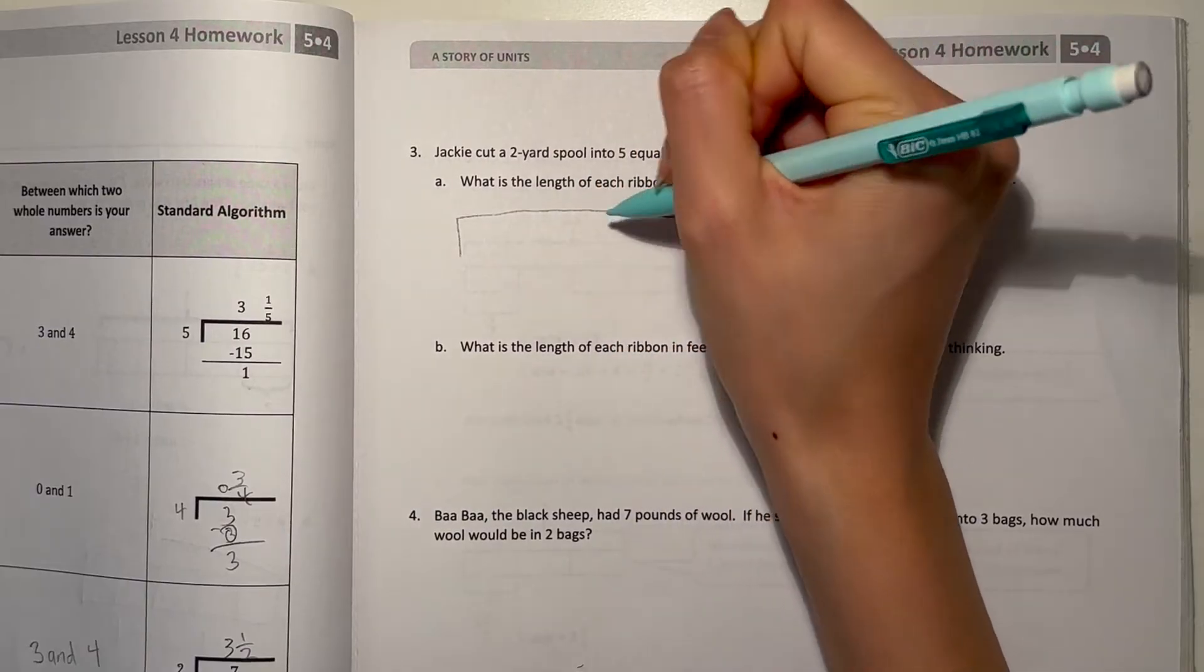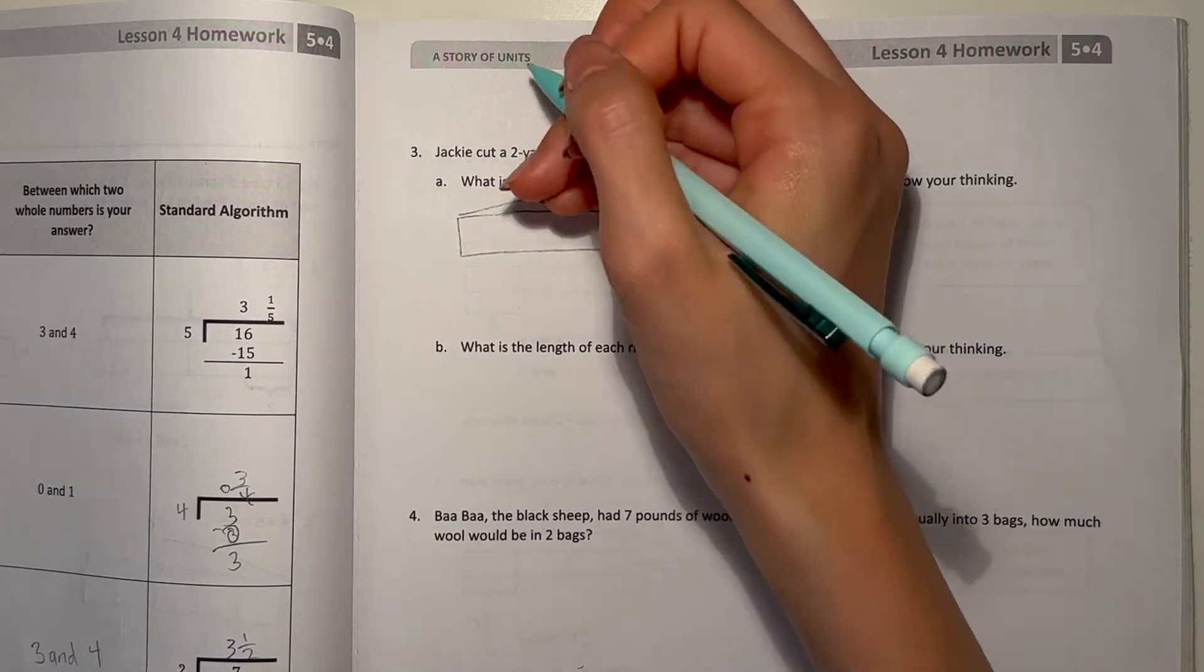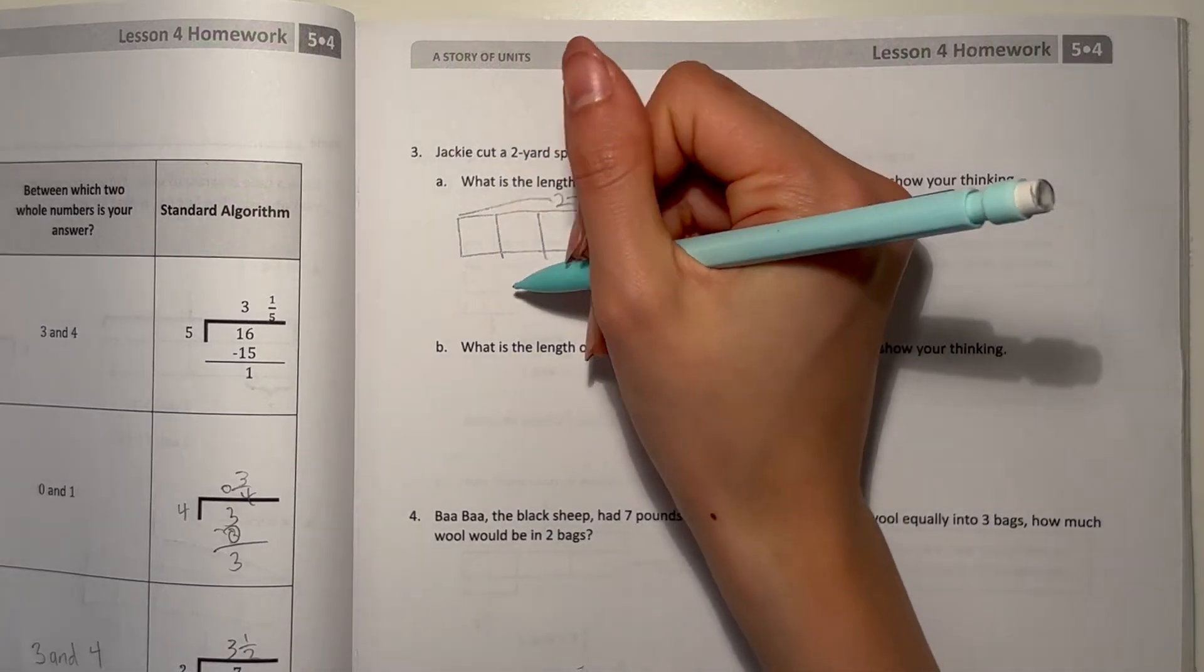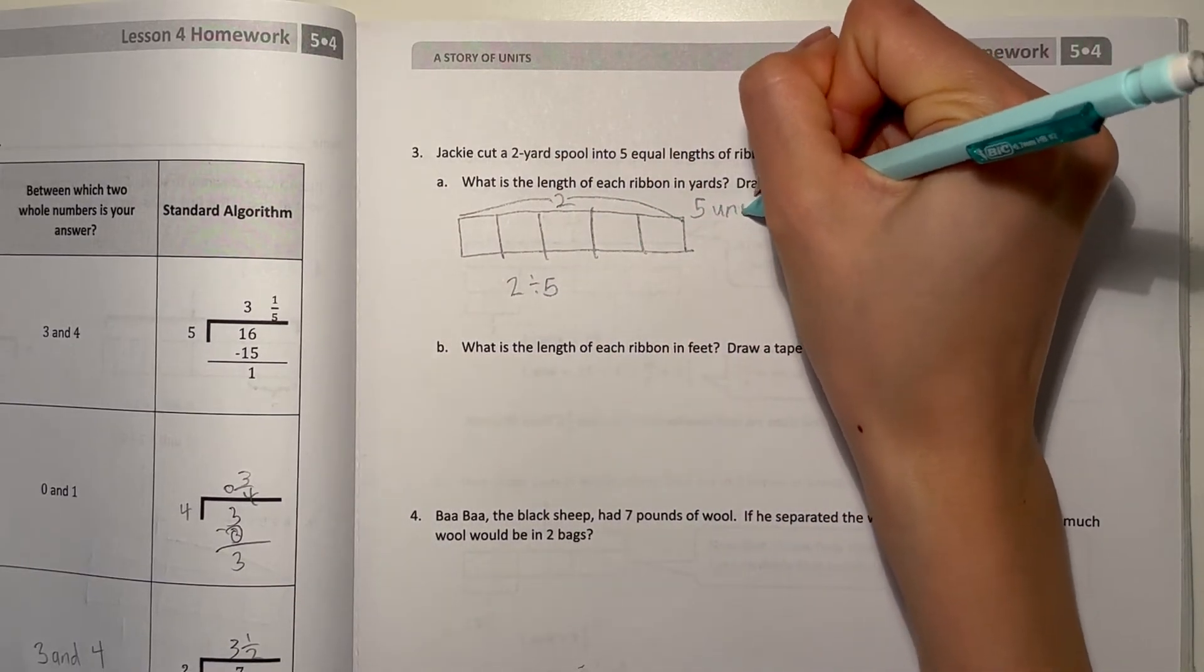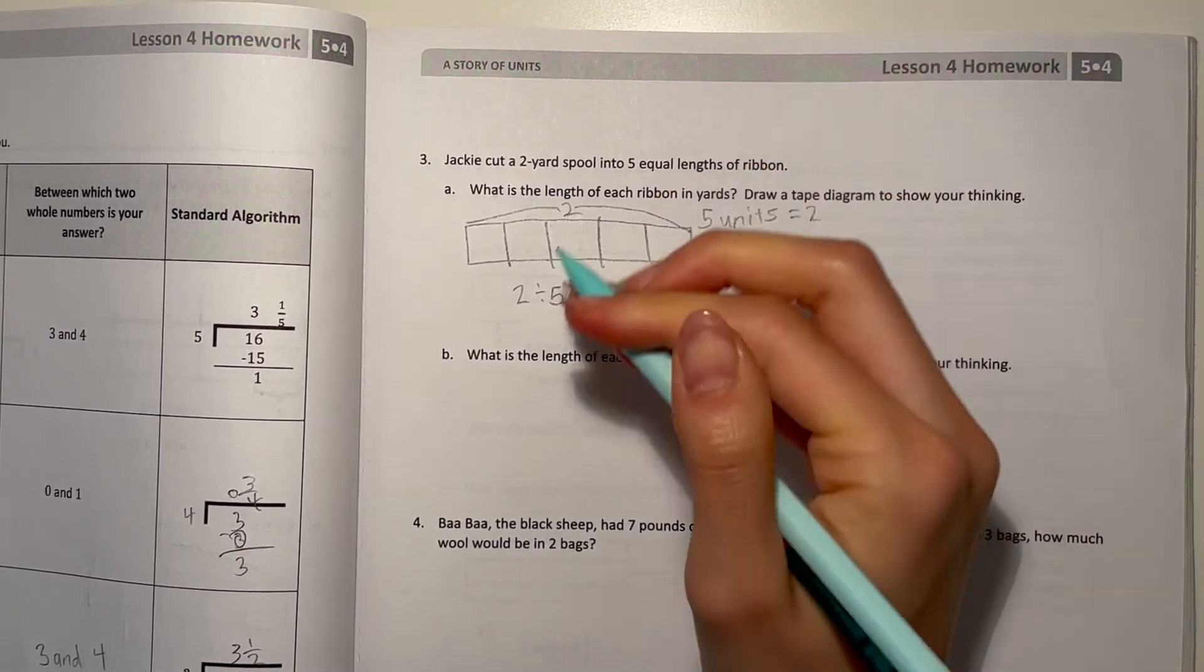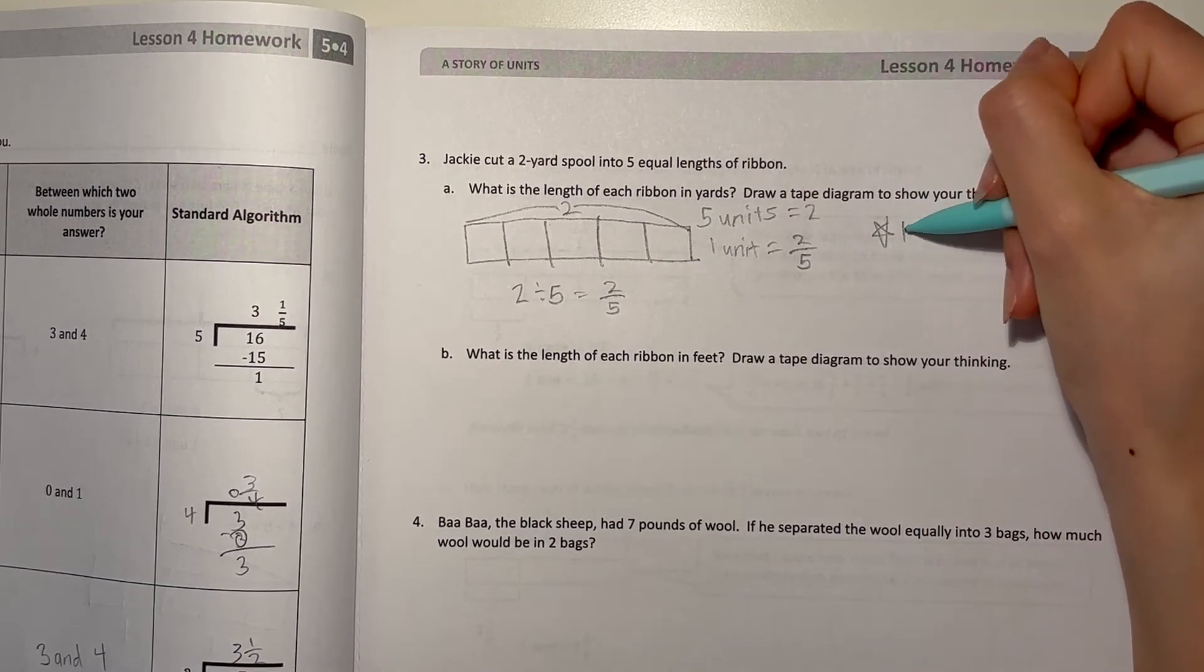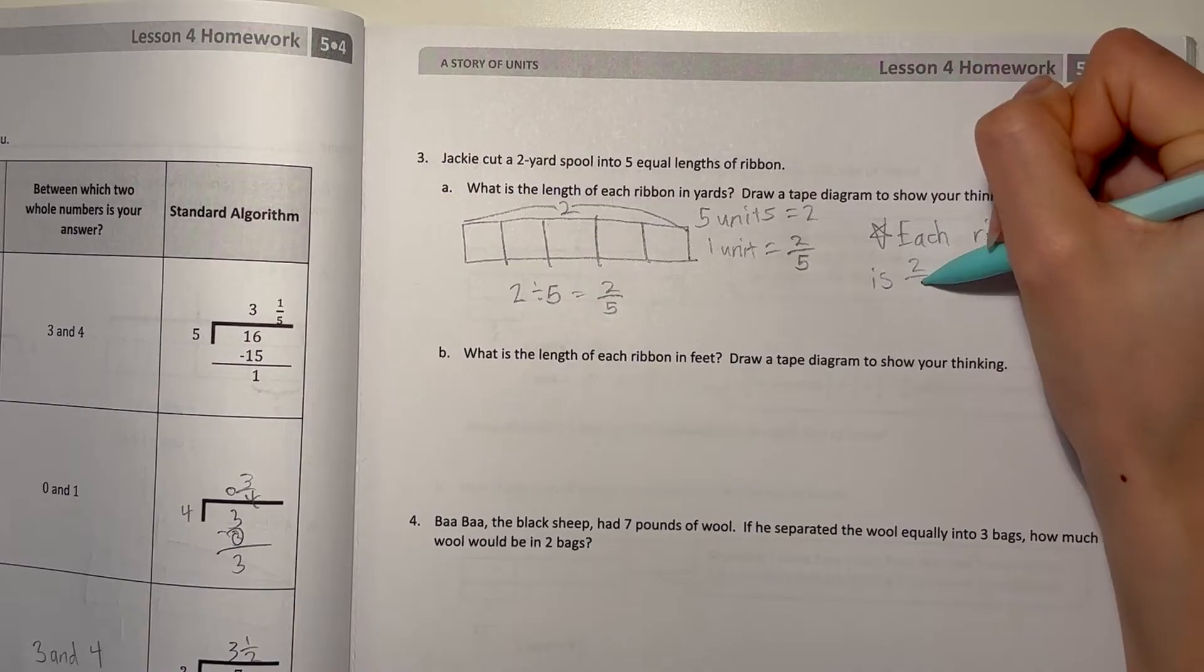So, our total is 2, because we have 2 yards. They're split into 5 equal pieces, so what's the length of each ribbon? 2 divided by 5. 5 units equals 2, then 1 unit equals 2 divided by 5 is 2 fifths. So that means each ribbon is 2 fifths.